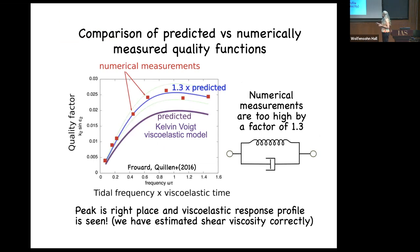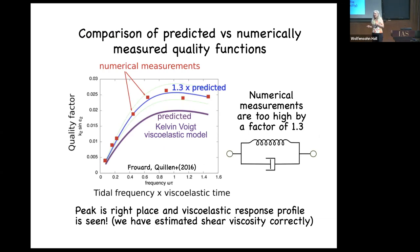Here's the line he predicted and the red dots from my simulation output. I measured the quality function — actually the semi-major axis drift, but you can convert one to the other. It's the right shape, has the right peak. We were just a little bit high, and we published the paper anyway. It was a 30% discrepancy — 30%, that's great.